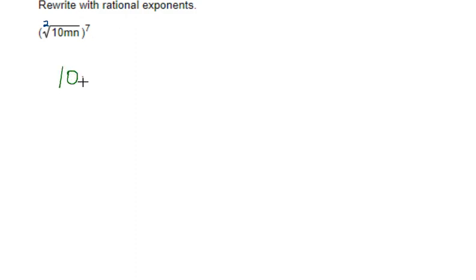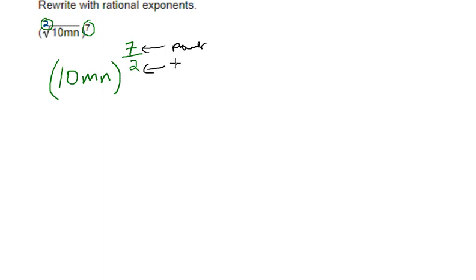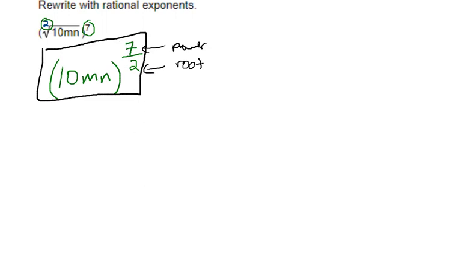Rewrite with rational exponents — this is going in the exact reverse direction. We want to rewrite this as an exponent instead of leaving it in radical form. There's no number written in the radical notation here, so when the number is missing, it's understood to be a 2 — it's a square root. So we'll have (10mn) raised to the power of a fraction: the top number is the power, which is 7, and the bottom number is the root, which is 2. So it's (10mn) to the 7/2 power.